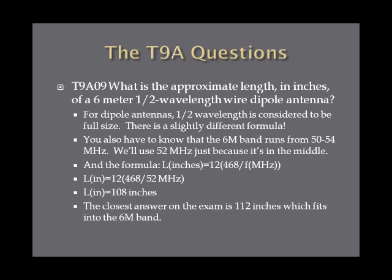What is the approximate length in inches of a six-meter, one-half wavelength wire dipole antenna? For dipole antennas, one-half wavelength is considered full size. The six-meter band runs from 50 to 54 megahertz; we use 52 as the midpoint. The formula is: length in inches = 12 × 468 ÷ frequency in megahertz. Plugging in 52 MHz gives 108 inches, and the closest answer on the exam is 112 inches, which fits within the six-meter band.